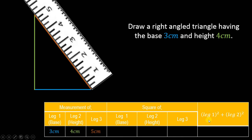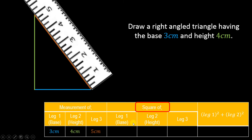Now the next three columns are for squares — that means you need the square of each leg's measurement. The first leg was 3 cm, so when you square it, the answer will be 9, because three times three equals nine — so squaring 3 gives the answer 9.